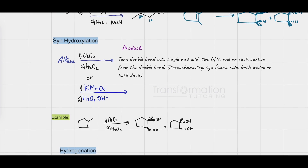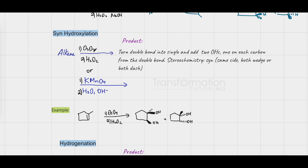Next is syn-hydroxylation. The reagents are first step OsO4, second step H2O2; or alternatively first step OsO4, second step NaOOH−. We turn our double bond into a single bond and add two OHs, one on each carbon from the double bond. Stereochemistry is syn — we show both OHs on a wedge or both on a dash. For example, if this OH is on a wedge, the methyl next to it has to be on a dash, and vice versa.